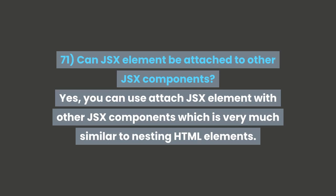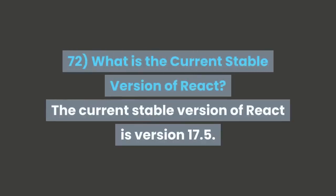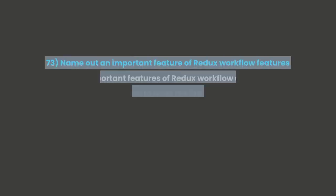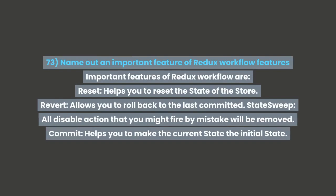Question 72: What is the current stable version of React? The current stable version of React is version 17. Question 73: Name the important features of the Redux workflow. Important features of the Redux workflow are: Reset — helps you to reset the state of the store; Revert — allows you to roll back to the last committed state; Sweep — all disabled actions that you might fire by mistake will be removed.